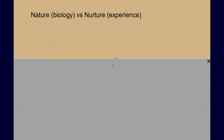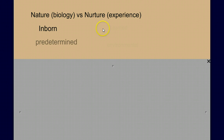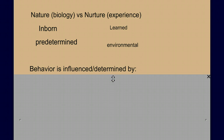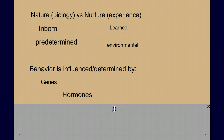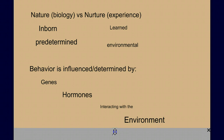As we discuss behavior in biology, we need to ask ourselves: is the behavior a natural, inborn thing — is it due to nature, the biology — or to nurture and experience? Are the behaviors inborn and predetermined, or are they learned and influenced by the environment? Well, the answer is always: it's both. Behavior is influenced and sometimes determined by genes and hormones, which interact with the environment.